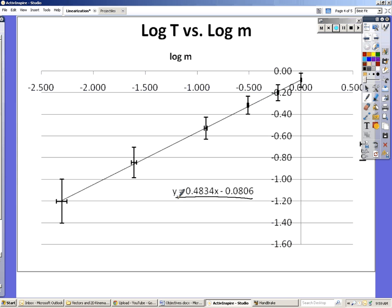And then you look at this graph. The slope we expected to be about 0.5. So this does confirm that our slope is what we thought it should be, that that power is 0.5. And this intercept here is equal to the natural log of (2π/√k), and we can use that to calculate k.